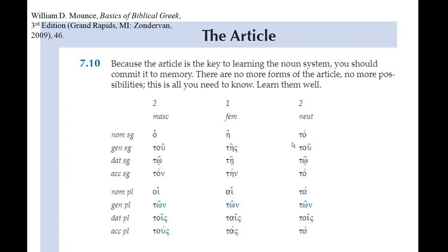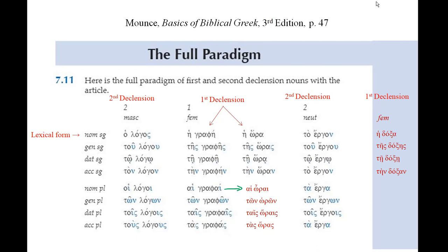So if you have an article along with your noun, you're in good shape because no matter what that noun is doing, the article tells you what's going on. We are now looking at page 47 of Mounce's Basics of Biblical Greek, third edition — this is the full paradigm of first and second declension. The red writing I've added provides extra explanation. The nominative singular row across the top is the lexical form. The labels refer to second declension, first declension, and second declension.